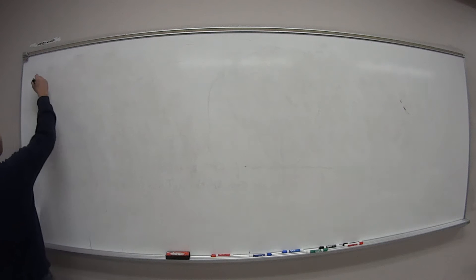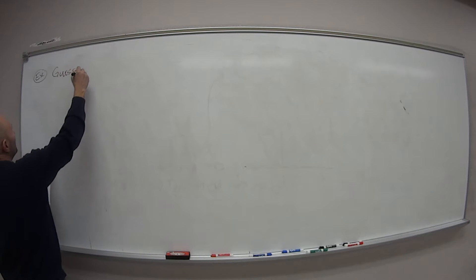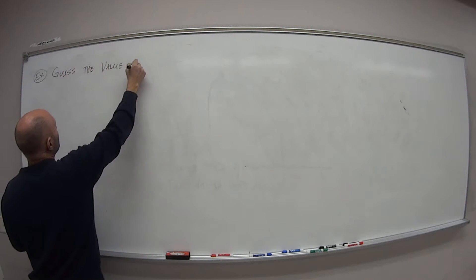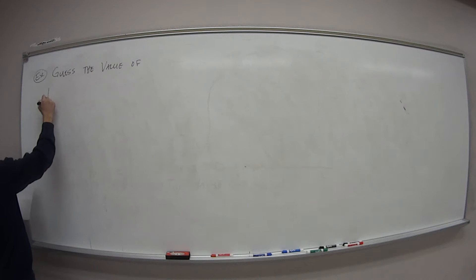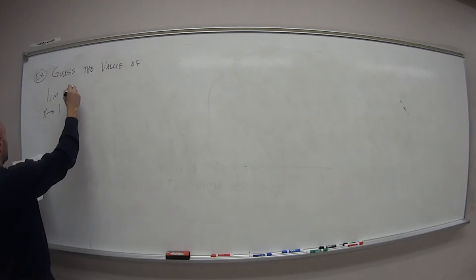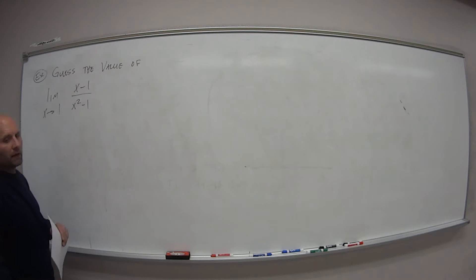So the first example we're going to look at is we want to guess the value of, and here's our notation, the limit as x approaches 1 of the following function, x minus 1 over x squared minus 1.